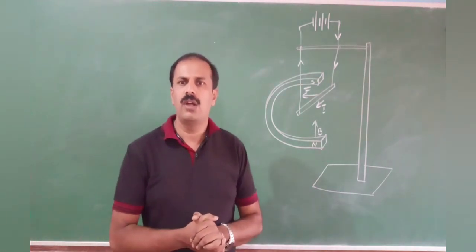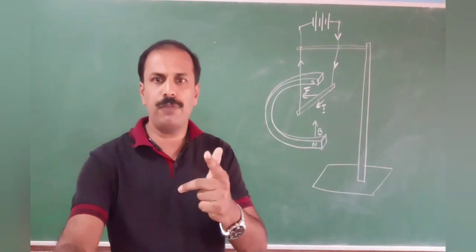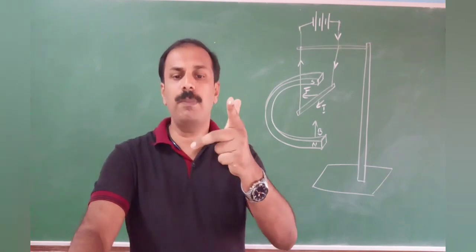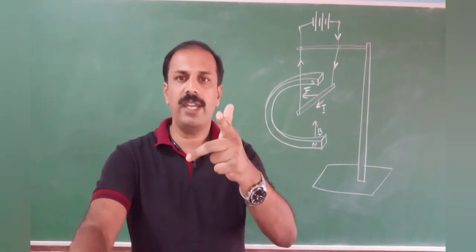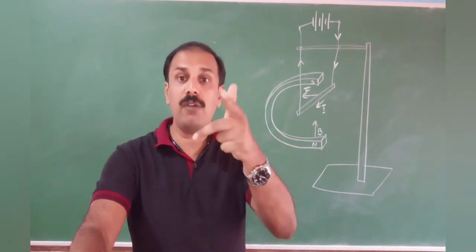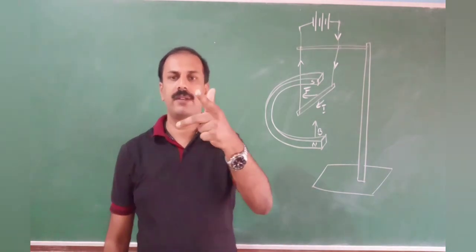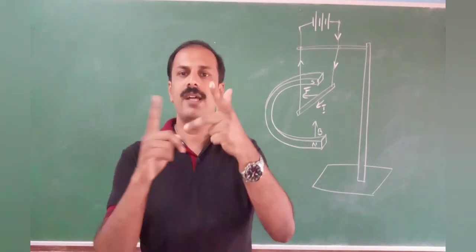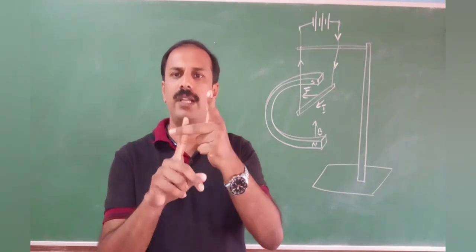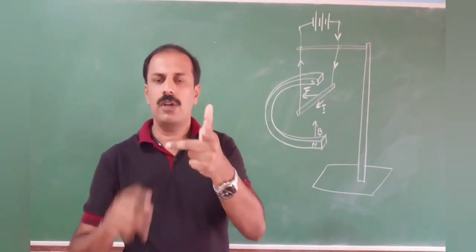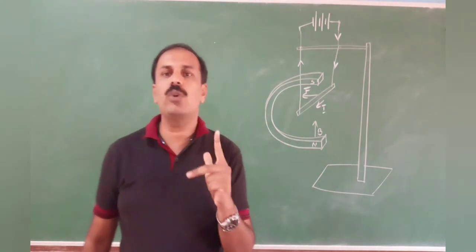For Fleming's left-hand rule, what we have to do is keep our fingers in the mutually perpendicular directions. This mutually perpendicular direction means we have to use the left hand. Firstly, you have to stretch your left hand — that is, the first finger, second finger, and the third finger. Or, we can call it the thumb, forefinger, and middle finger. We have to use these three fingers, and these three fingers should be in mutually perpendicular directions.